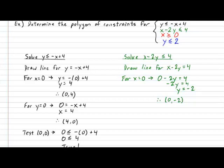Let's get a second point. Completely randomly, I plug in zero into the y. So y equals zero. I will get x minus two times zero equals four. Simplifying, that gives me x equals four. And that gives me a second point located at (4, 0).